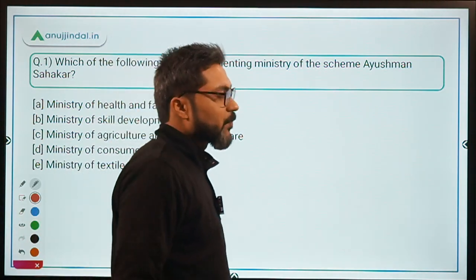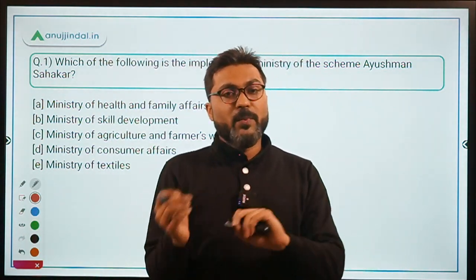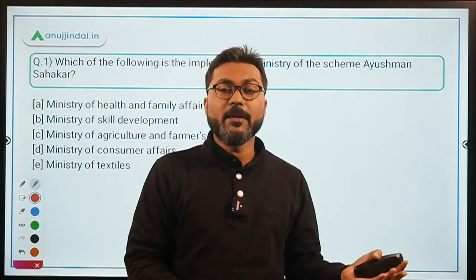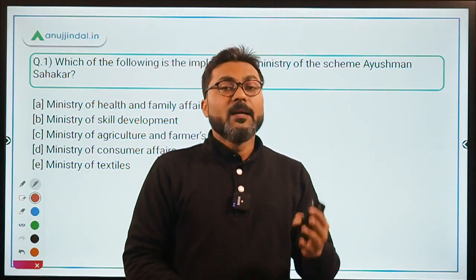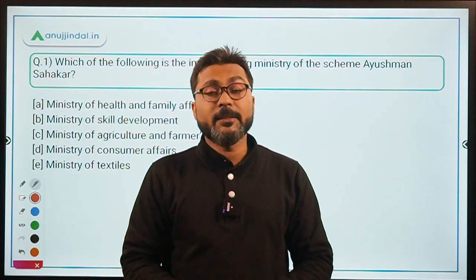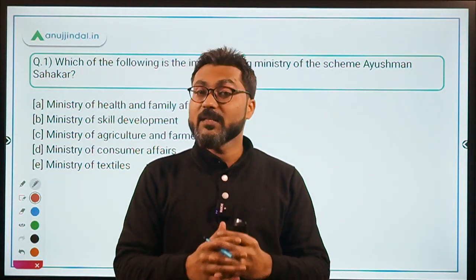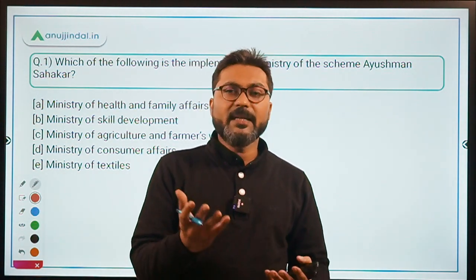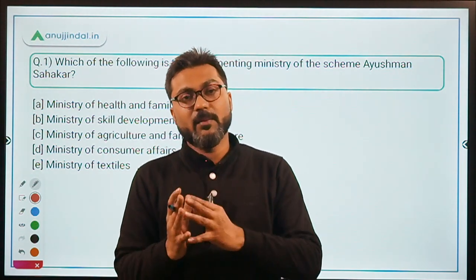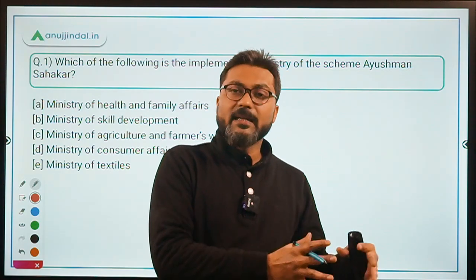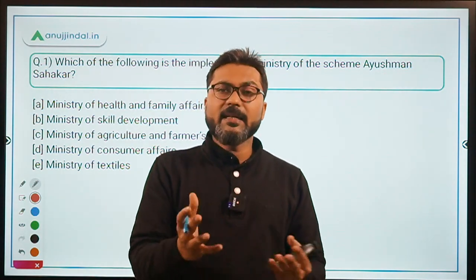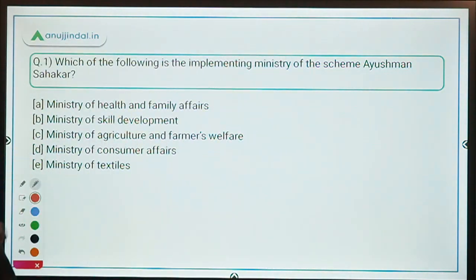To summarize the scheme: Ayushman Sahikar — good health and cooperative. The government wants to promote holistic healthcare with the help of cooperatives. The scheme was launched in 2020 by NCDC, the National Cooperative Development Corporation, which works under the Ministry of Agriculture and Farmers Welfare. The key activity is infrastructure building related to health and medical facilities, with a specific funding pattern.